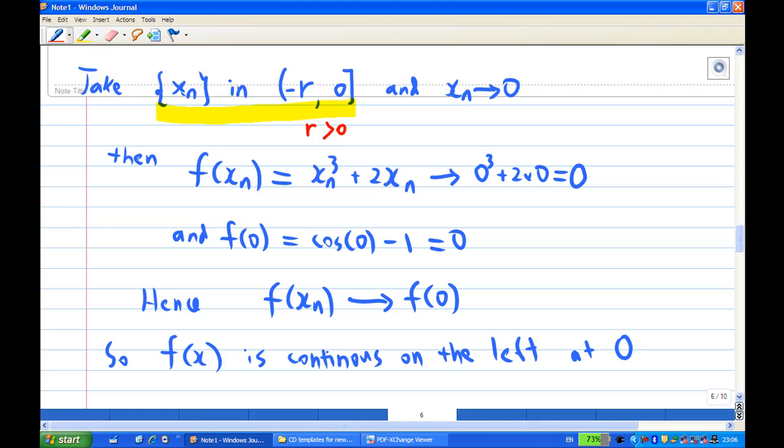Then f of xn equal to xn² plus 2xn now, because xn is less than 0. Take note of that, because of our interval. Therefore, f of xn converges to xn² plus 2xn, now it converges to 0² plus 2 times 0, which is 0 by the combination rule.